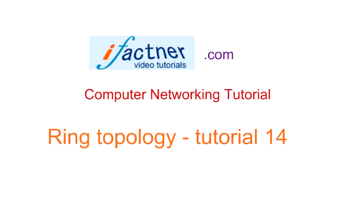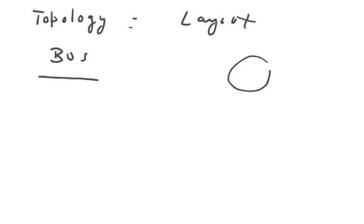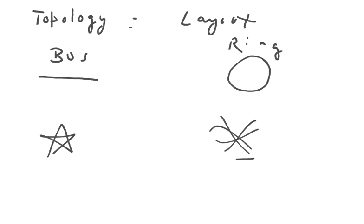Welcome to the 14th computer networking tutorial from ifactner.com. Today we will discuss ring topology. We have already discussed that topology means the layout of a computer network — how it is physically or logically laid out. There are four types of topologies: bus topology, ring topology (our topic today), star topology, and mesh topology.